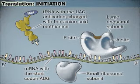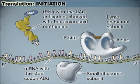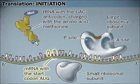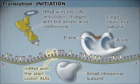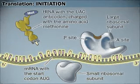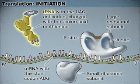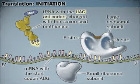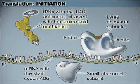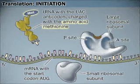Translation is RNA-directed polypeptide synthesis. An initiation complex forms at the start codon of the mRNA. The complex consists of the messenger RNA, a tRNA with the complementary anticodon, charged with the first amino acid — always methionine — and the small ribosomal subunit.